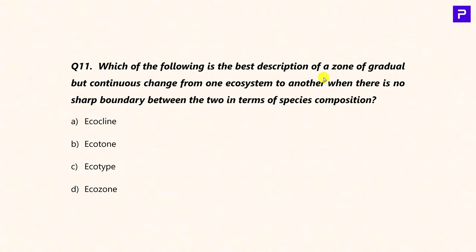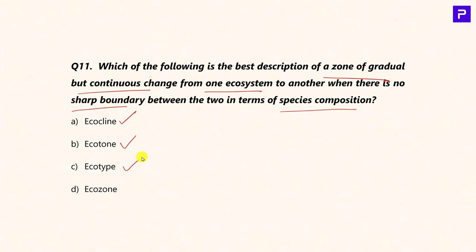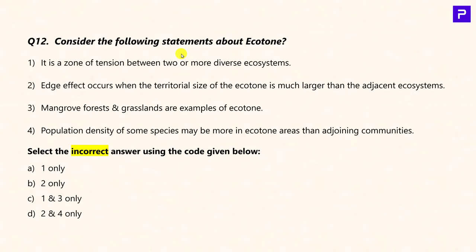Question 9: Which term describes a zone of gradual but continuous change from one ecosystem to another with no sharp boundary in terms of species composition? The answer is Ecocline. Ecotone is the transition zone between two major biomes or ecosystems; Ecotype is a specific kind of species unique to a particular habitat; and Ecozone refers to biogeographic realms — there are 8 in the world, separated throughout evolutionary history by significant geographic barriers. Question 10: Statements about Ecotone — it is a zone of tension between two or more diverse ecosystems (True). Edge effect does not occur when the terrestrial size is larger; edge effect occurs when species in the Ecotone are higher in number than in surrounding ecosystems (False as stated). Mangrove forests and grasslands are examples of Ecotone (True). The answer for the incorrect statement is 2 only.